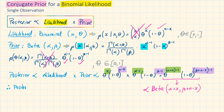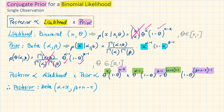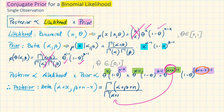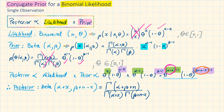As a conclusion, the posterior is a beta distribution with parameters alpha plus x and beta plus n minus x. Writing this out completely, this is equal to gamma of alpha plus x plus beta plus n minus x — which simplifies to alpha plus beta plus n — over gamma of alpha plus x times gamma of beta plus n minus x, times theta to the power of alpha plus x minus 1, times 1 minus theta to the power of beta plus n minus x minus 1.